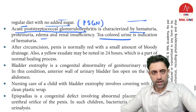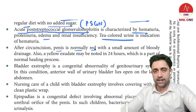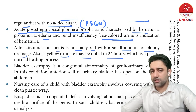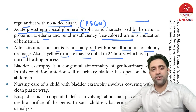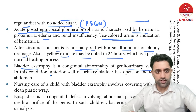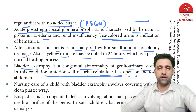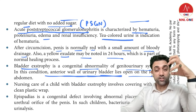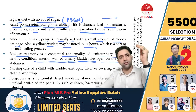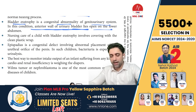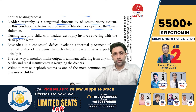After circumcision, the penis is normally red with a small amount of bloody drainage; a yellow exudate may be noted in 24 hours as part of normal healing. Bladder exstrophy is a congenital problem of the genitourinary tract where the anterior wall of the urinary bladder lies open — a reddish bladder visible in imaging. It is a common image-based exam question.